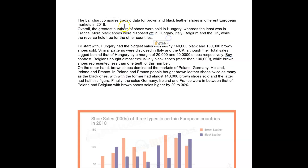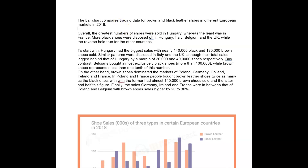So I want four sections, remember? So I'm going to have this here. Overall, the greatest number of shoes were sold in Hungary, whereas the least was in France.